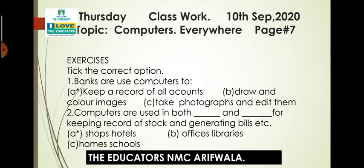Computers are used in both dash and dash for keeping record of stock and generating bills etc. Kin do cheezon ke liye use hota hai? The answer is shops and hotels — to keep stock records and generate bills. Offices, libraries, homes, and schools are not the correct options here.